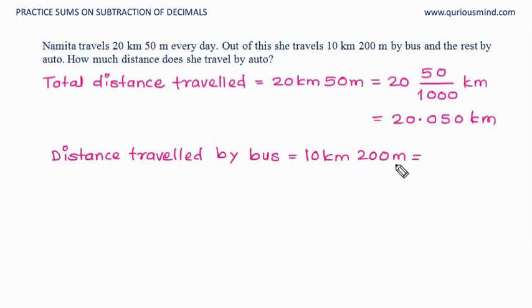Distance traveled by bus: 10 kilometer 200 meters. 10 kilometer does not need any conversion, 200 meter will be divided by 1000. 10 whole, point. We need three digits, we have three digits. 10.200 kilometers. Now to find the distance traveled by auto, we will have to subtract this distance from this. We will write them one below the other.